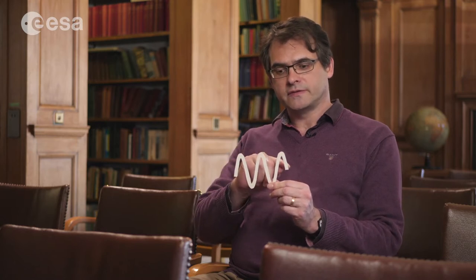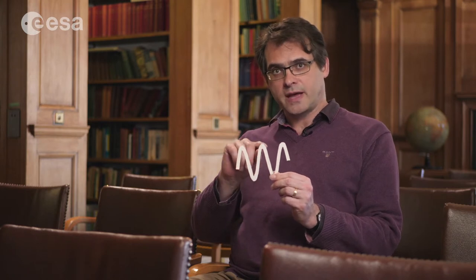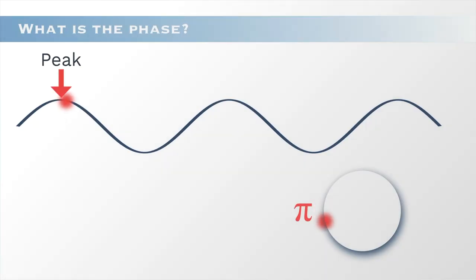Radar interferometry is one of the truly remarkable things that you can do with a radar system. Interferometry relies on the fact that the radar systems are able to measure the phase of the wave, and the phase is the point in the wave's cycle. We are able to determine whether the wave is on its way up towards a peak, on its way down towards a trough, or back up towards a peak again. We measure that over the cycle of the wave — from 0 to 360 degrees, or 0 to 2 pi radians, for a full cycle.